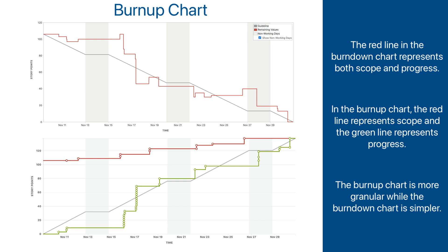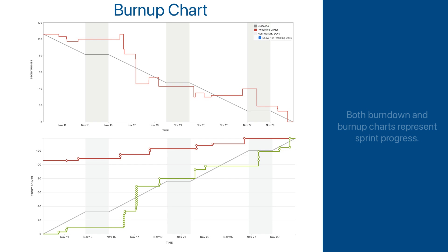Therefore, it is fair to say that the burn-up chart provides more granular information since it separates scope and progress. The burn-down chart, on the other hand, merges those two together, and it is less complex while conveying almost the same information. That is all you need to know about the burn-up chart. If you feel you do not need both burn-down and burn-up charts, you are very likely correct — basically, both of them convey the same information in a different way: how is the sprint progressing over time?